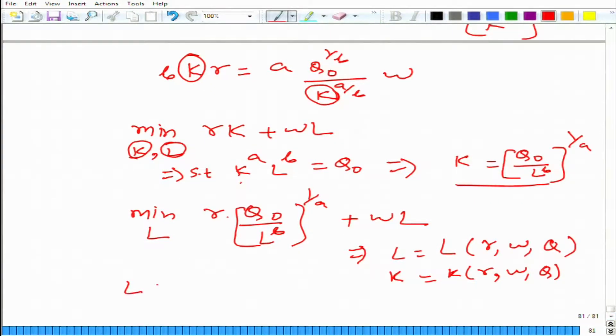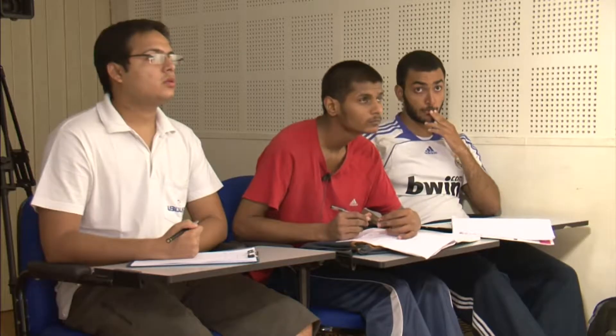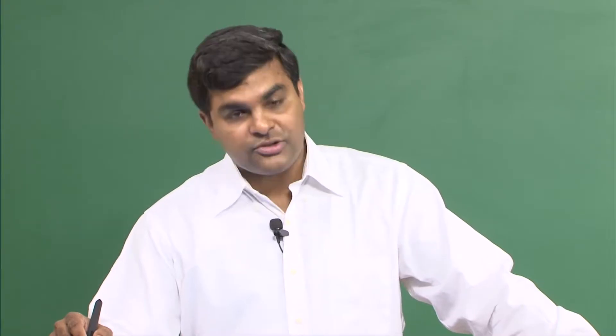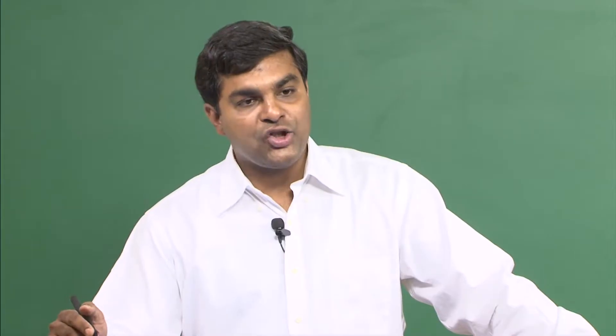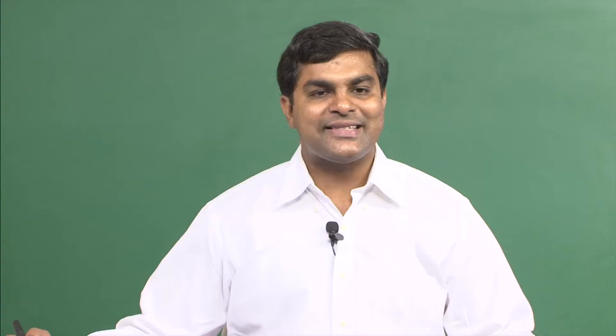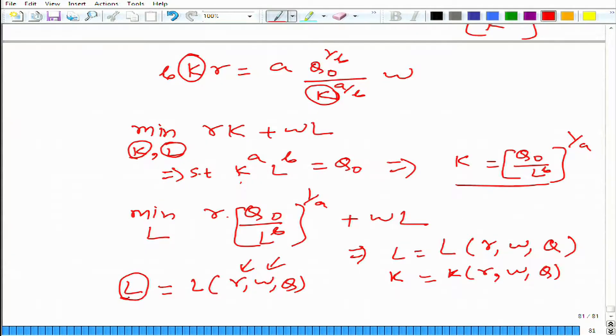What does this give? Let's focus on this equation. This gives the amount of labor you require to minimize the cost of production of output q, when the market price of labor is w and market price of capital is r. In other words, what is l? l is the amount of labor that this firm demands from the market.